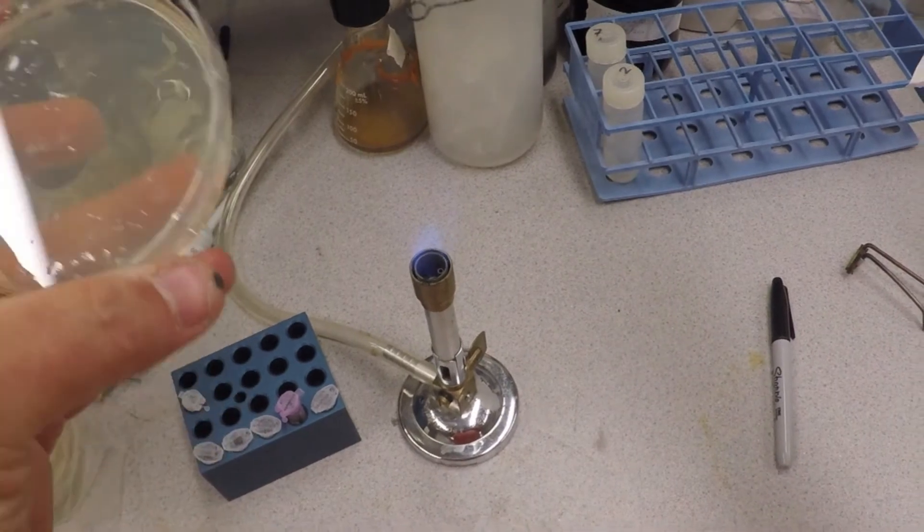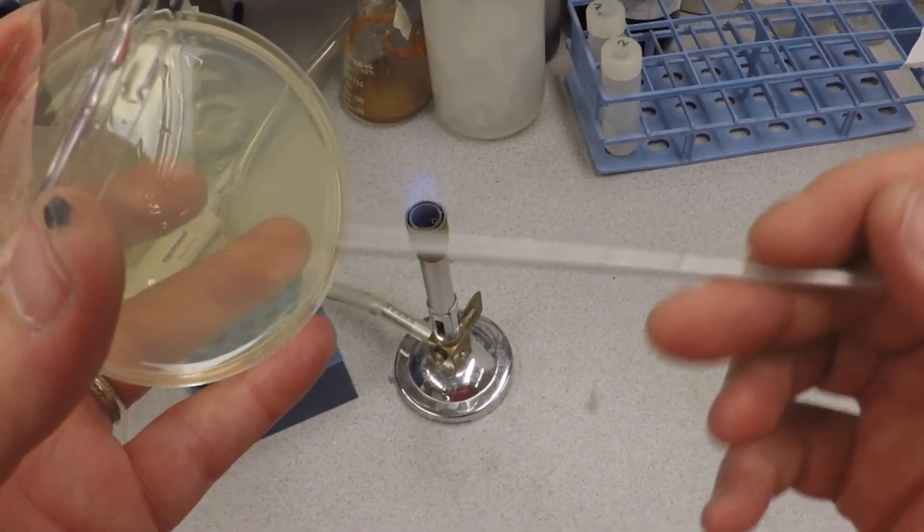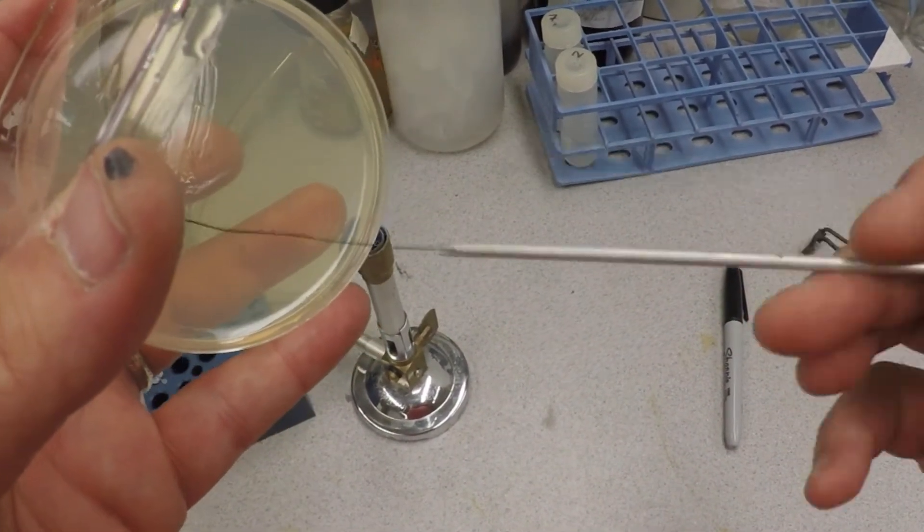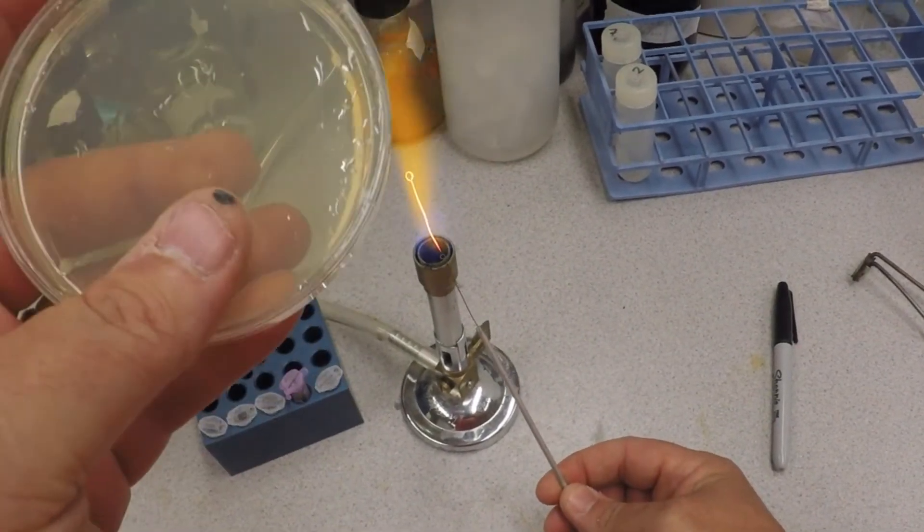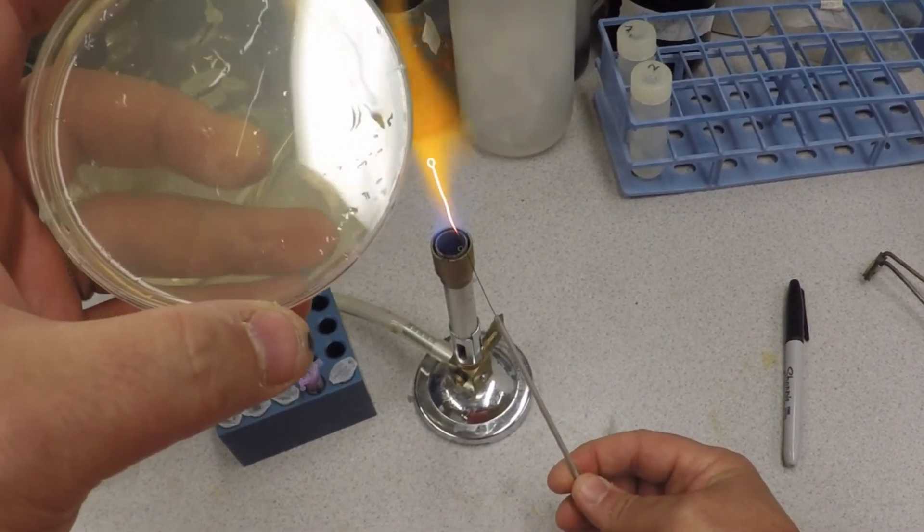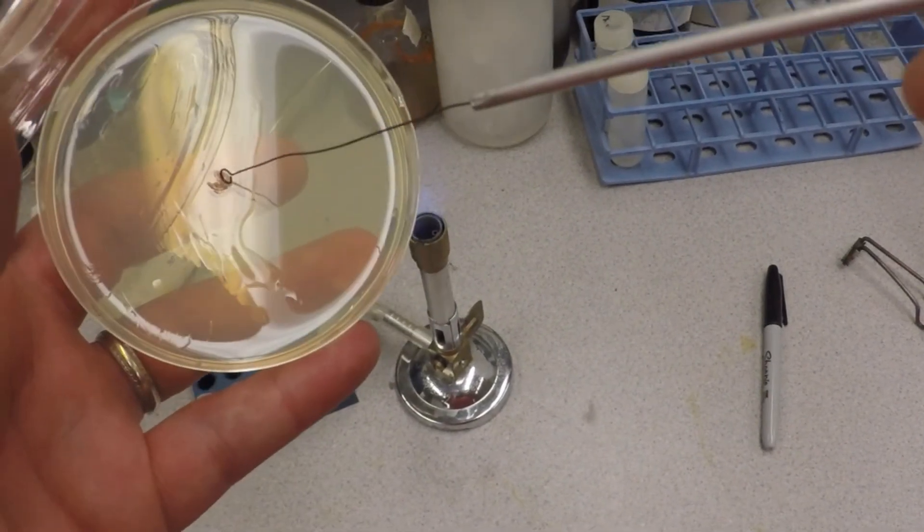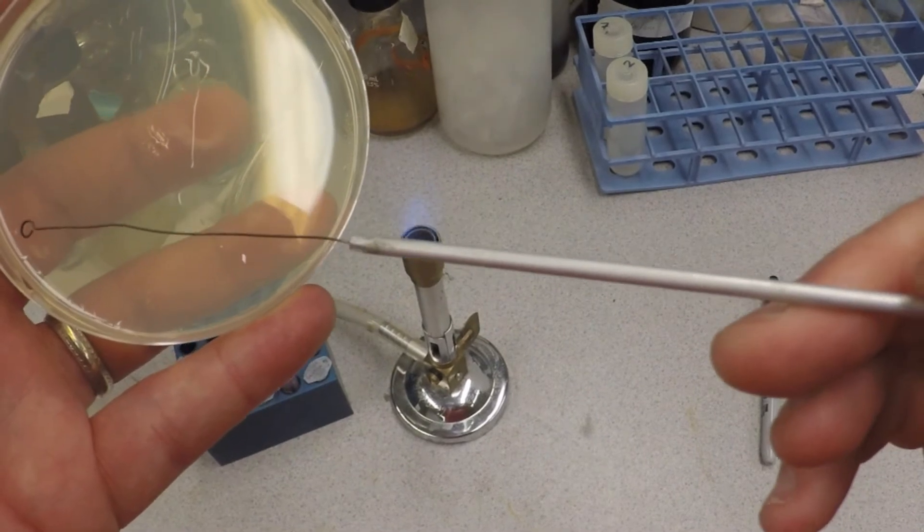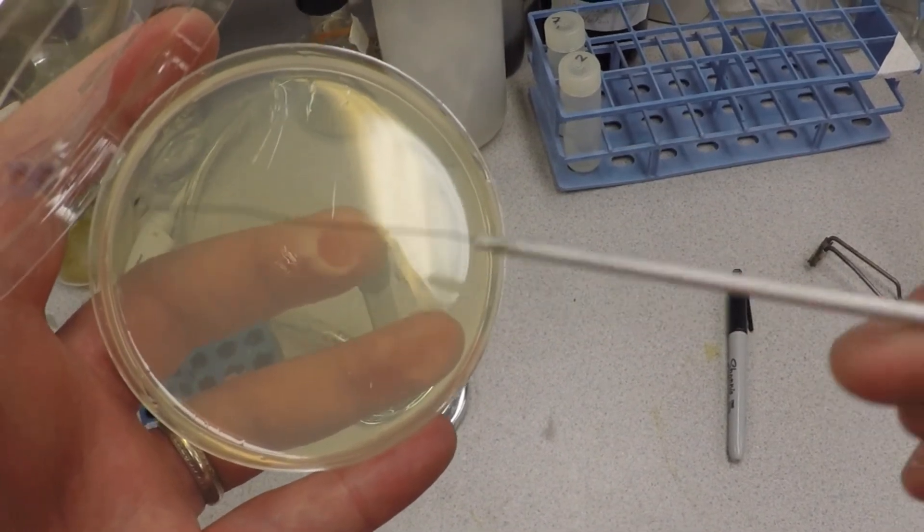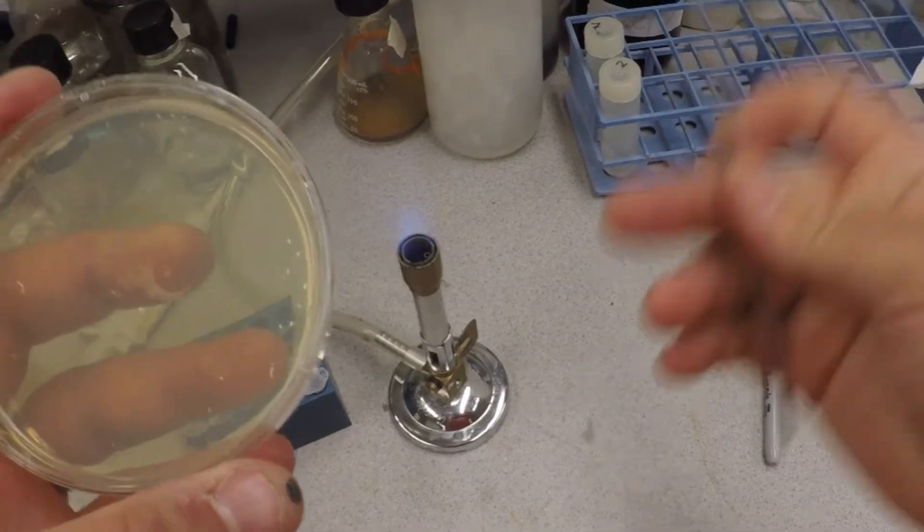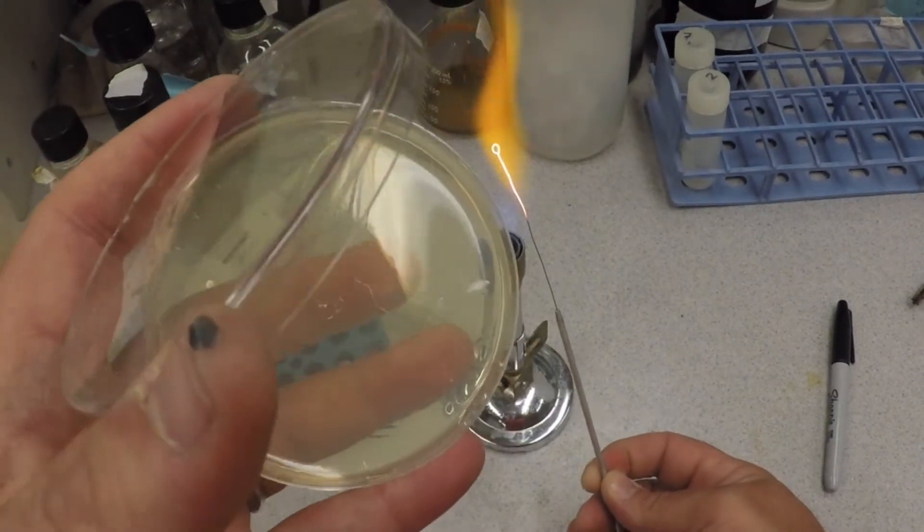To streak a plate, you're going to open the lid carefully, go to one quadrant and go back and forth, streaking it back and forth. Close the lid, flame this. Now you're going to turn the plate a few degrees, and I can see where I've already streaked it on the agar plate. Cool the loop, go in, and this time drag across and lift, drag and lift, drag and lift, drag and lift. Four times maybe. Nuke it again, turn the plate some more.